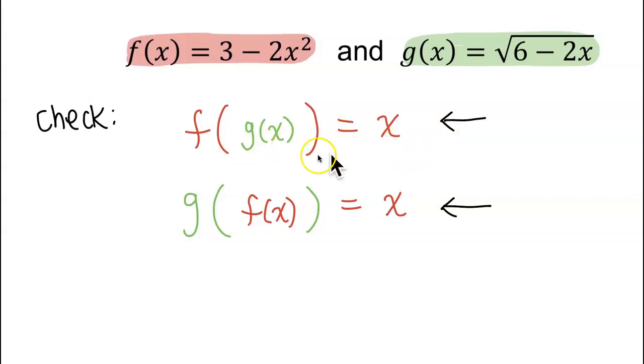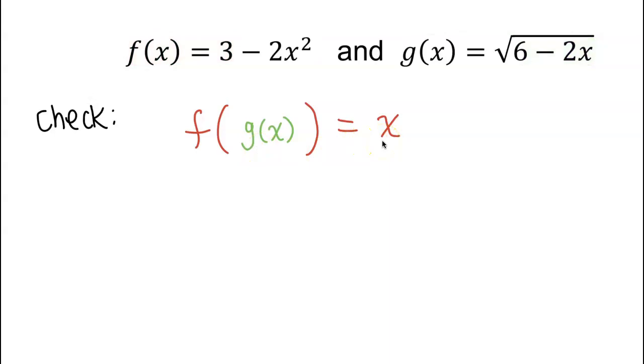But if the first one doesn't even come out to be x, there's no reason for us to check the second condition, because to be inverses, both of these must be checked off. So let's check the first condition. Is f of g of x equal to x?